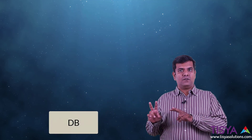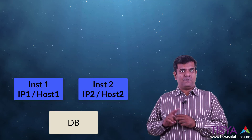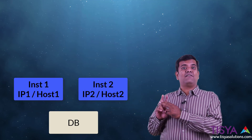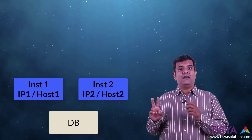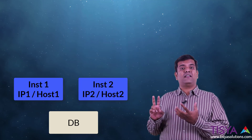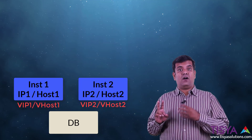When an application connects, it contacts a listener and then gets connected to the instance. When you have an RAC setup with two nodes, there are going to be two instances running on two different hosts. Both hosts will have their own respective IP addresses. Additionally, the cluster software that manages the cluster will also assign something called a Virtual IP address, or VIP, to both nodes.